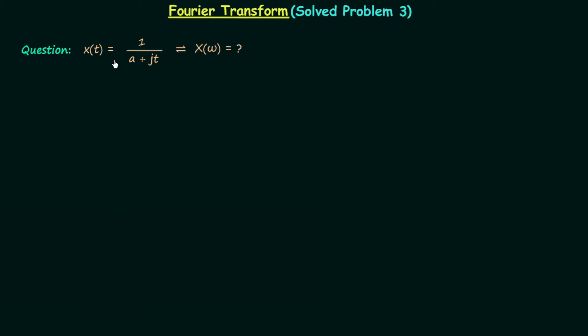In this question, signal x(t) is equal to 1 over a plus jt, and we are required to calculate its Fourier transform X(ω). Now do you remember any Fourier transform of this form? I bet you do.